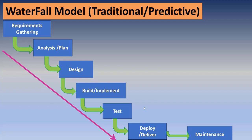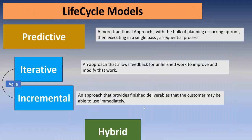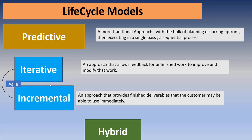In previous years, before Agile became popular, teams faced these problems — customers, organizations, and employees all struggled with the Waterfall model from every point of view. That is why everyone is moving to Agile. Agile is an iterative plus incremental model, whereas the predictive approach is the Waterfall model.